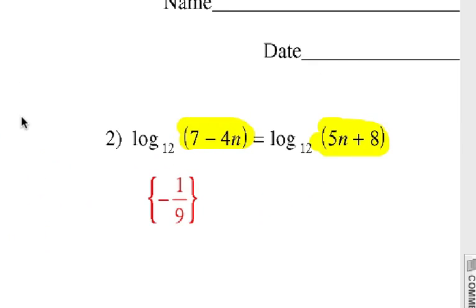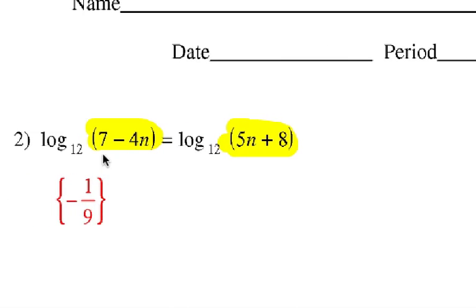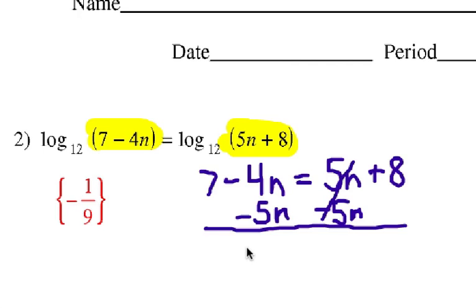Now, let's look at number two. Again, I have the same base, in this case log 12, of that expression equals log base 12 of that expression. So, let's go ahead and make those expressions equal, and write an equation, and we will solve. We're going to assume that you've gotten fairly comfortable with these algebra steps, and it's just a multi-step equation. First of all, we're going to subtract 5n from each side. And so, now we have 7 minus 9n equals 8.